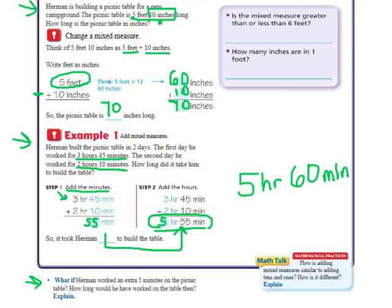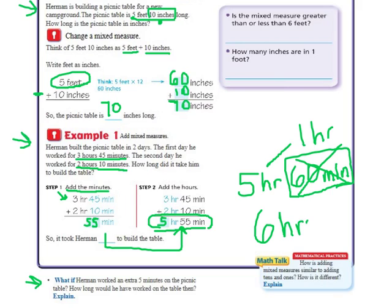But they don't want us to leave the 60 minutes like this because we know that 60 minutes is equal to an hour. So we're going to take it out, change it from minutes to 1 hour, add it to the 5 hours for a total of 6 hours.